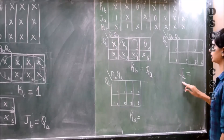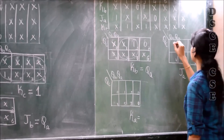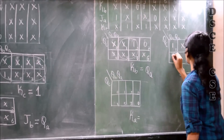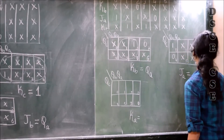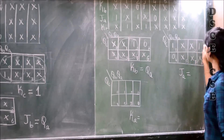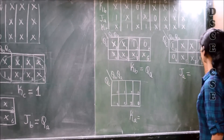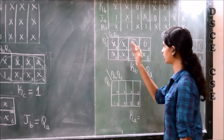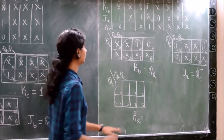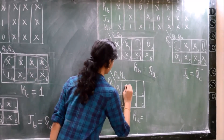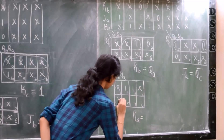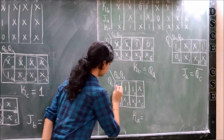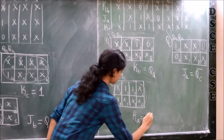Now drawing the K-map for JA, the conditions are 1, don't care, 1, don't care, 0, and don't cares. Thus we get a quad form. So the value of JA becomes QB·QC bar. Drawing the K-map for KA, the values are don't care, 1, 1, 1, don't care, and remaining don't cares. Thus we get a quad form, and the value of KA becomes 1, which is high.